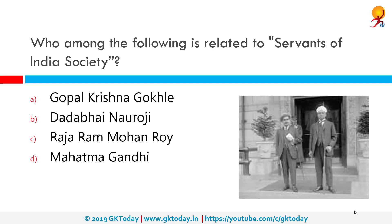Who among the following is related to the Servants of Indian Society? The correct answer is Gopal Krishna Gokhale. The Servants of India Society was founded in 1915 by Gopal Krishna Gokhale to build a dedicated group of people for social service and reforms. In the field of famine relief, union organization, cooperatives and upliftment of tribals and the depressed, the society did commendable work.